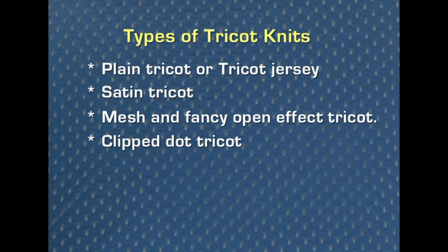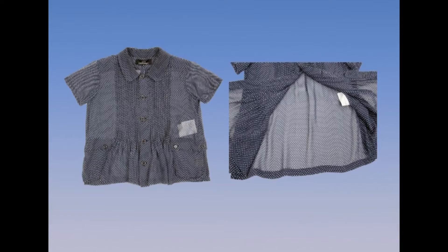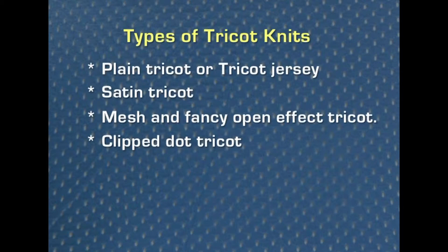Clipped dot tricot is a variation of 2-bar tricot jersey that has a third bar knitting a different kind of yarn at intervals on the face and floating the yarn on the back between the dots. The floats are then clipped off. Subsequent cross dyeing results in a dot pattern of one color on a background of another color. Outer weight tricot is not really a specific fabric; the term represents a wide variety of fabrics constructed for specific purposes.